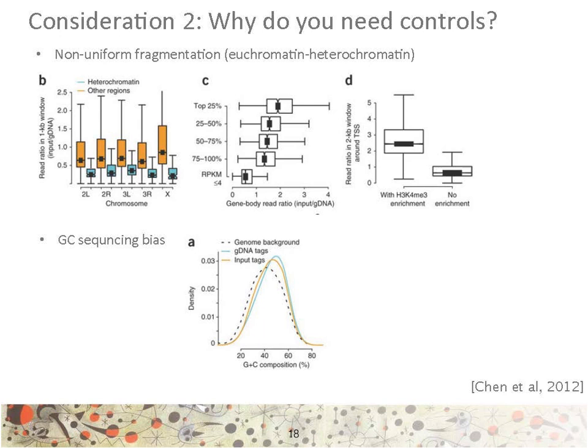Finally, panel A on the second row shows the GC% distribution of both the genomic and input DNA versus what is known from the genomic sequence, shown as a black dotted line. There is a clear bias toward GC-rich sequences. Furthermore, the bias is context-dependent — it differs between the two cell lines.